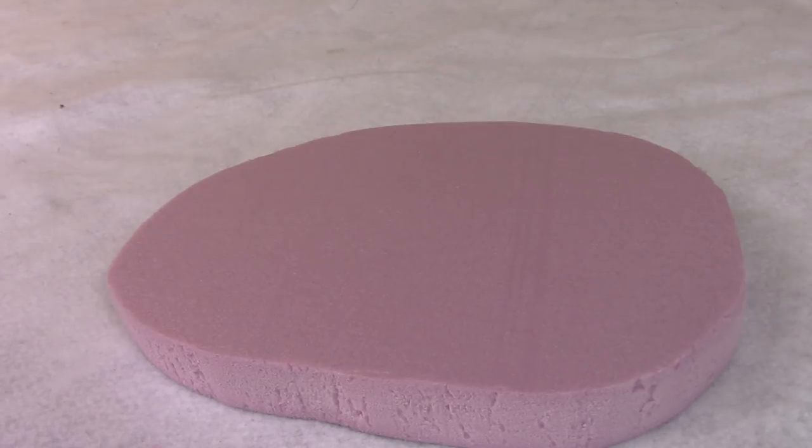But the problem with that is the chemicals in the aerosol can will interact with the polystyrene and cause it to melt. Some aerosols won't cause it to melt but most will. The one I happen to have will cause it to melt and that's going to be a problem. So the next step will be to seal it with some PVC or Elmer's glue.